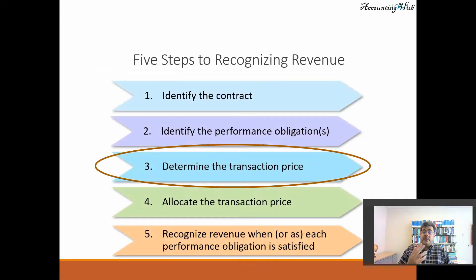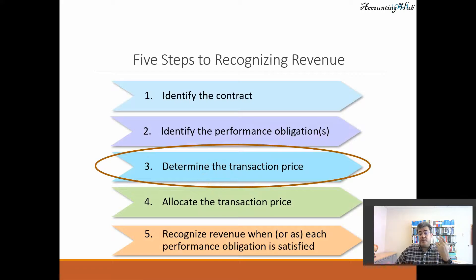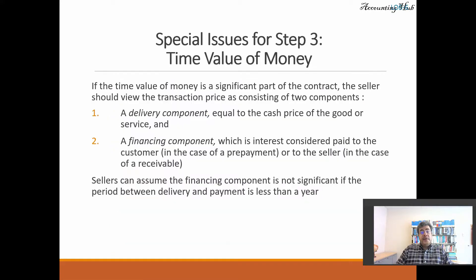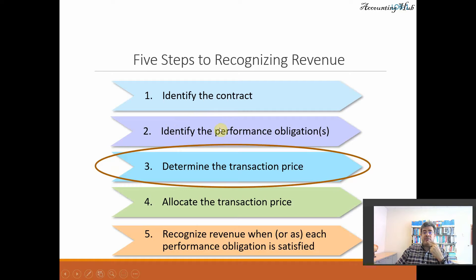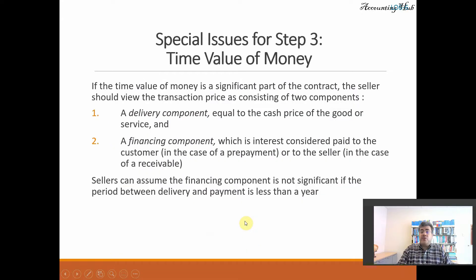Why do we have it? Because if we consider the five steps to recognizing revenue, the third one is the transaction price. And time value of money is all about price. If the time value of money is a significant part of the contract, the seller should view the transaction price as consisting of two components: the delivery component — that is the revenue, where we satisfy the performance obligation — and the financing component, which is interest considered paying to the customer in the case of prepayment, or to the seller in the case of a receivable.